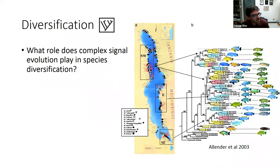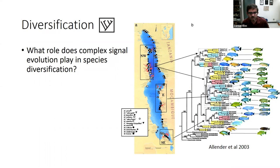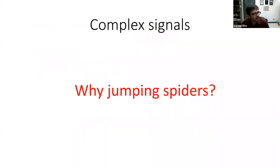Another question I'm really interested in is how complex signal evolution plays a role in species diversification. There are famous examples from the African Rift Lakes where evidence shows that the evolution of visual signals caused an explosion of diversity. So what role does complex signal evolution play in species diversification? Now I'm going to be talking about jumping spiders, and before I get into my work, I want to talk about why jumping spiders are a good system to study these things in.